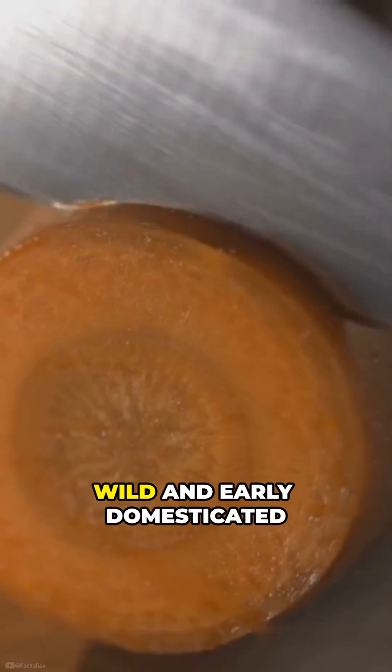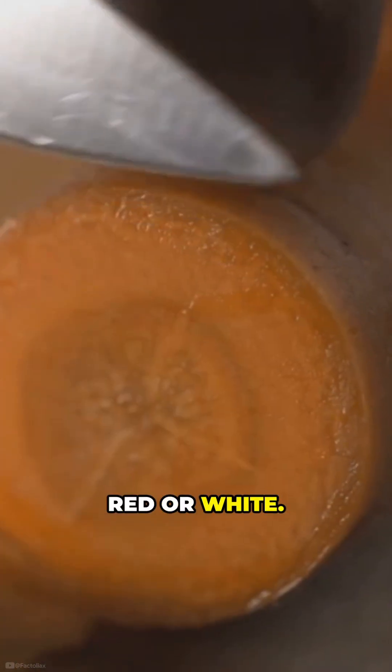Second, carrots. Wild and early domesticated carrots were purple, red, or white.